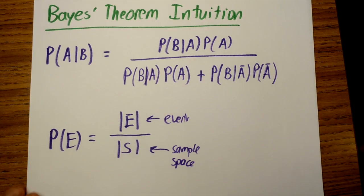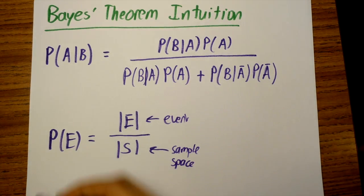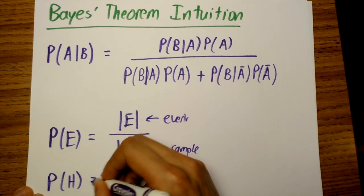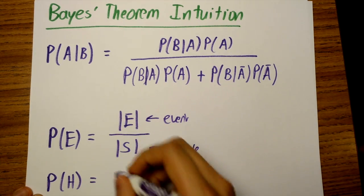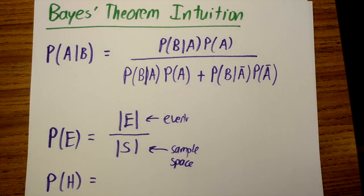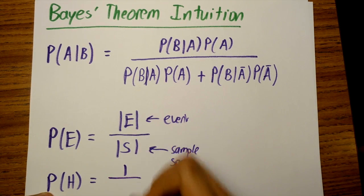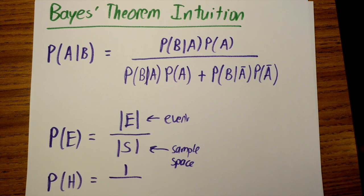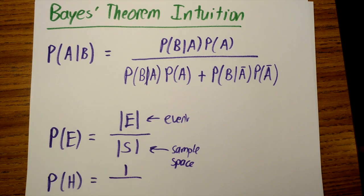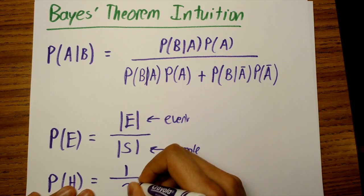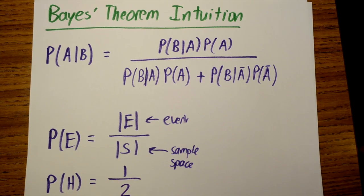If we apply this to flipping a coin, the probability of getting heads equals one (the number of ways to get heads) divided by two (heads and tails are the possible outcomes). So P(H) equals 1/2, and we get our familiar answer of one half.